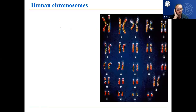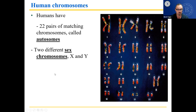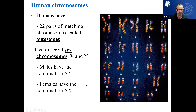Here's another karyotype with a couple of differences. Notice these little dashes — these are the centromeres, the places where they're attached. If we look at the sex chromosomes, we have two X's that are similar, so this means this is female. Females have two X's, males have an X and a Y. Humans have 22 pairs of matching chromosomes called autosomes — the non-sex chromosomes, the numbered ones that have nothing to do with gender. And then two sex chromosomes: X and Y. Males have the combination XY, females have the combination XX.